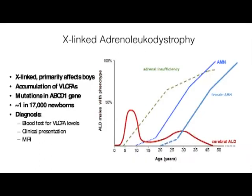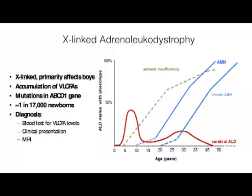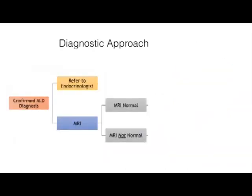Looking at this over time, this graph shows that with the mutation and elevations in very long chain fatty acids, there is about a 30–40 percent chance of developing cerebral ALD in childhood. If that doesn't occur, the likelihood is much higher of developing adrenal myeloneuropathy and adrenal insufficiency, but about 20 percent of patients are still at risk for developing cerebral ALD. Once the diagnosis of ALD is confirmed, you need to quickly refer to an endocrinologist to assess for adrenal insufficiency.